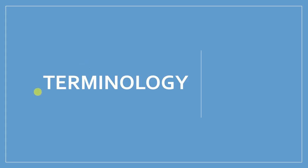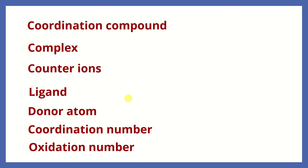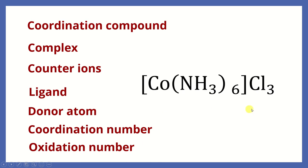The first thing we're going to learn about coordination compounds in this chapter is all the terms and their meanings. So I start this chapter with terminology. We're going to learn about the meaning of coordination compounds, complex, counter ions, ligand, donor atom, coordination number, and oxidation number — so we can understand when we see a formula of a coordination compound.